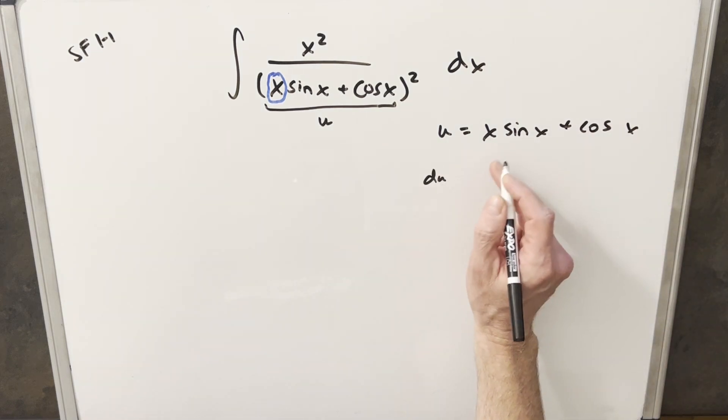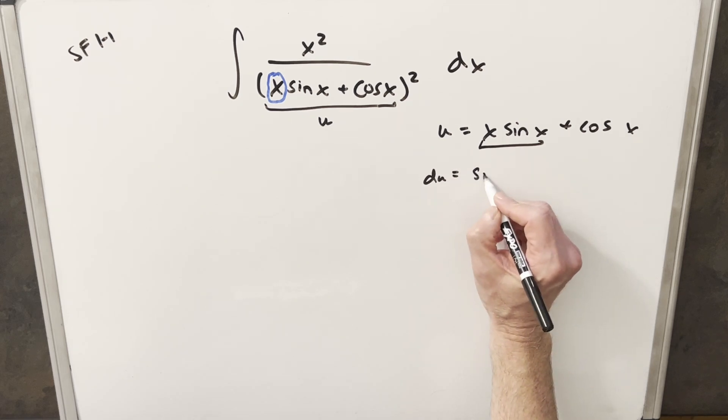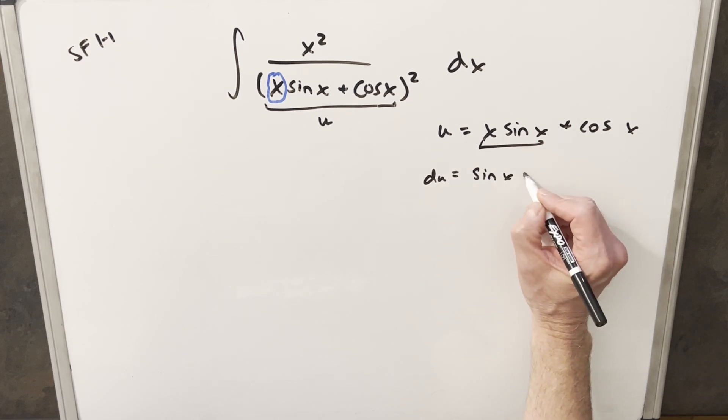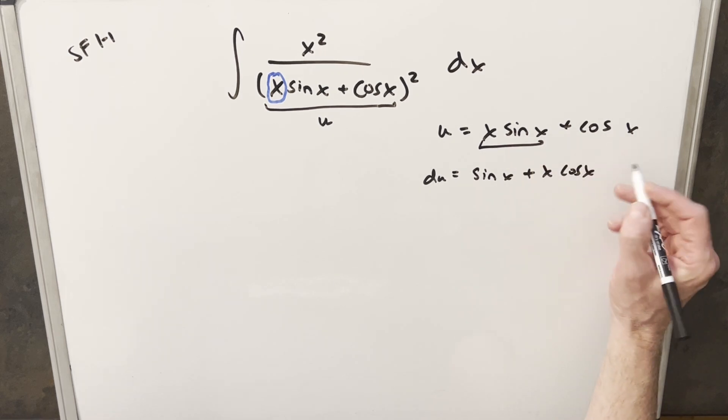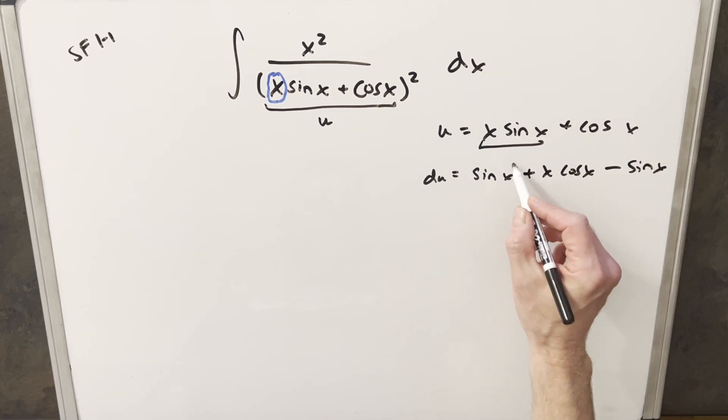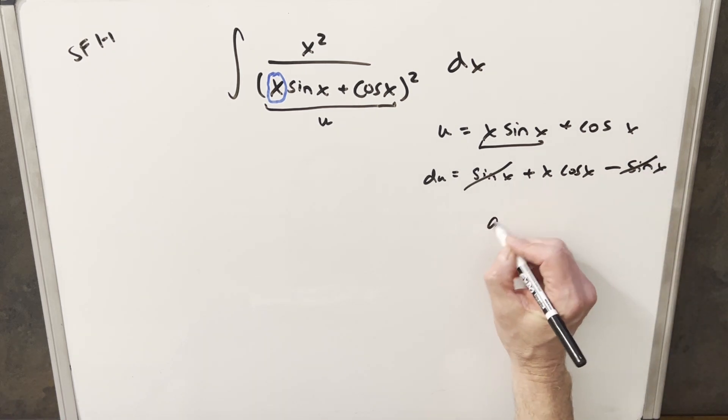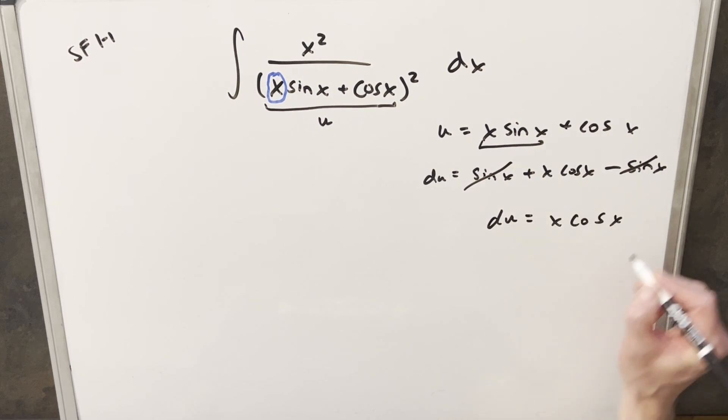Then when I take my derivative on this, first we need the product rule on x sine x. This is going to give me sine x plus x cosine x for the second term of this. And then the derivative of this is going to be minus sine x. But this was the simplification. I noticed that the sines are going to cancel. And so our du is pretty nice because our du is just x cosine x dx.